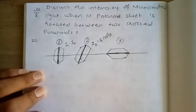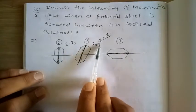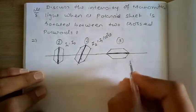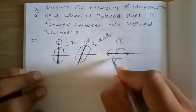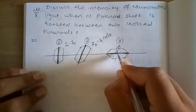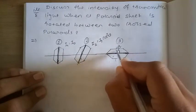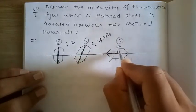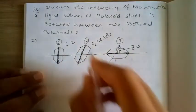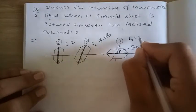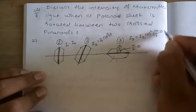So the intensity at polaroid 2 is I2 = I1·cos²θ. Now for the third polaroid, instead of theta the angle is (π/2 - θ). So the intensity of polaroid 3 is I3, with input intensity I2, giving I2·cos²(π/2 - θ).